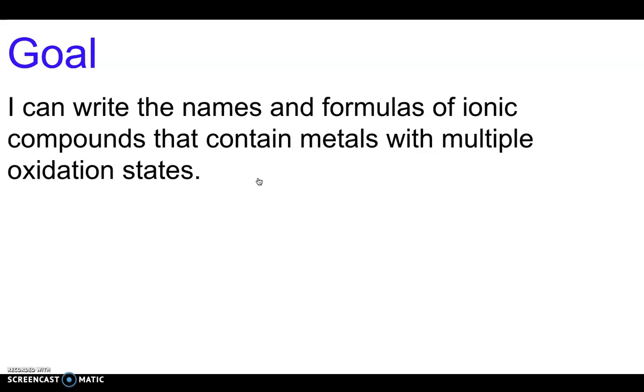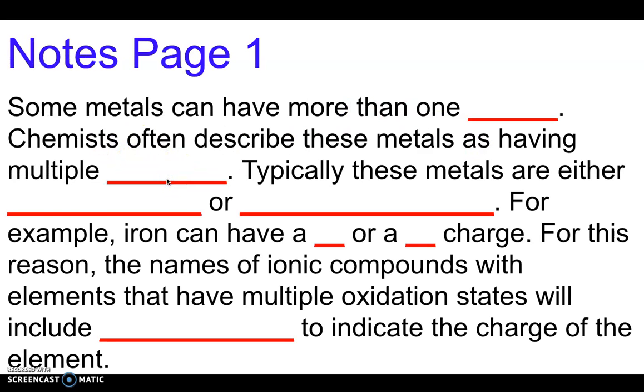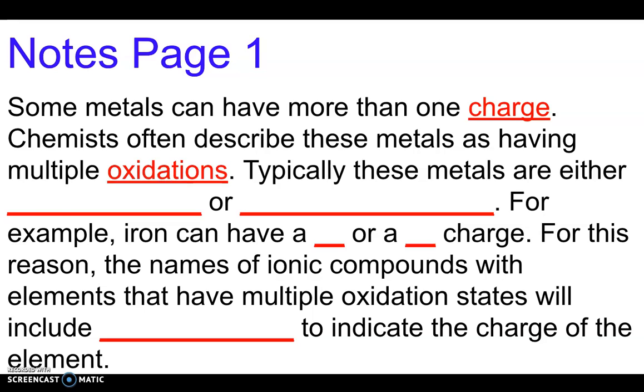So first we'll get into what multiple oxidation states means. Some metals can have more than one charge, and so chemists often describe these metals as having multiple oxidation states. Basically, think about iron for example - it can be +2 or +3, and so for that reason we can say that iron has a +2 oxidation state or a +3 oxidation state.